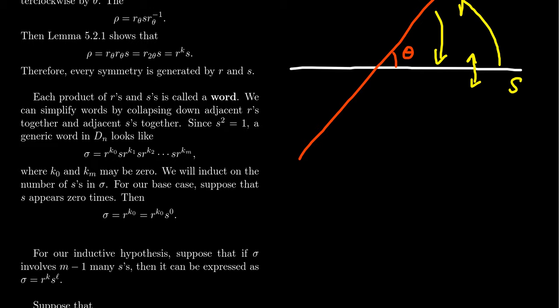We've now shown every symmetry of the n-gon — rotational or reflective — can be written as a power of R or as R^k S. This proves R and S generate the entire group. Each product of R's and S's is called a word. Since S is its own inverse and R^(n−1) = R⁻¹, we need no inverses in our alphabet of {R, S}.